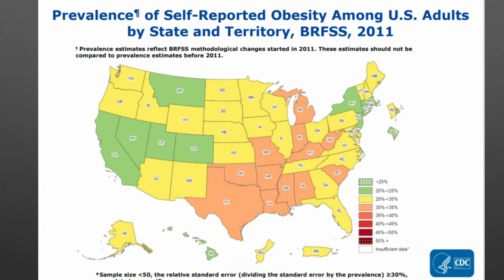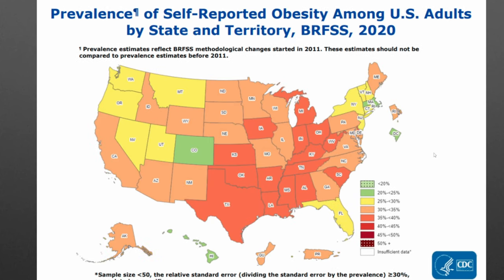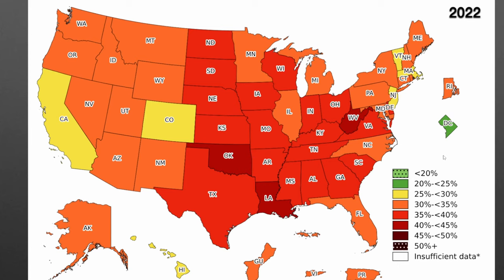By 2020 you can see it has not gotten better — only Colorado, Hawaii, DC, and Massachusetts were holding on. As of last year, only DC is still green, and we have a couple of states like Oklahoma, Louisiana, and West Virginia going into the 40-45% range. So you are going to be seeing patients who are overweight and obese, and they respond differently than normal weight patients. It's getting worse and worse.